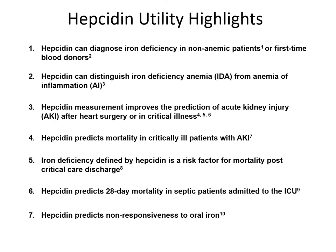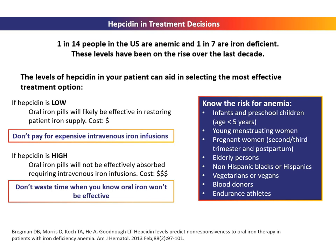Hepcidin's role in controlling ferroportin expression effectively regulates iron absorption from the gut. As such, hepcidin can predict the responsiveness to oral iron, which provides clinicians a decision point to prescribe oral iron — a cheap, non-invasive option — or require intravenous iron administration. With the high prevalence of anemia in the U.S., a doctor may prescribe oral iron pills or intravenous iron infusions. Iron pills are cheap but can cause gastrointestinal distress, leading to poor patient compliance and failure to metabolize if not readily absorbed.